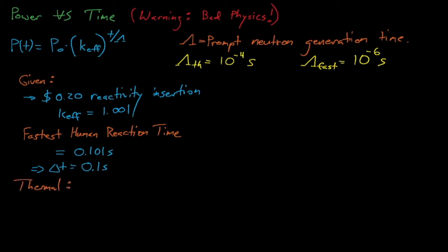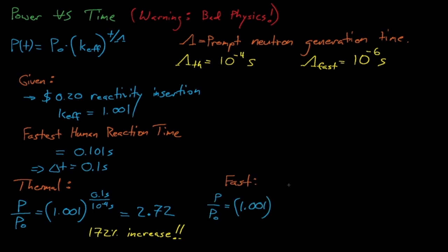Let's say that our operator manages a superhuman feat and beats this record, reacting to scram the reactor in 0.1 seconds after the transient begins. In that amount of time, the reactor power will increase by 172% for a thermal reactor, and it will have increased by a factor of 2.557 times 10 to the 43 for a fast reactor.